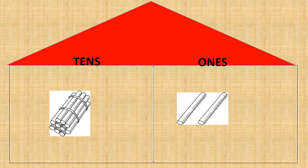So children, here we see a place value house. Let's build numbers using this place value house. In the place value house, we have tens and ones. Let's start counting the bundles in tens place. In tens place, we have one bundle of ten, which means we have one ten. And in ones place, we have one, two — two ones. So one ten and two ones makes the number twelve.